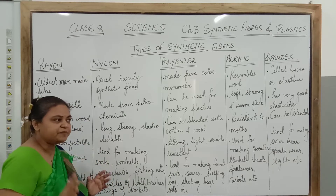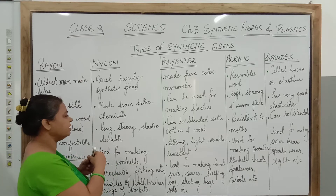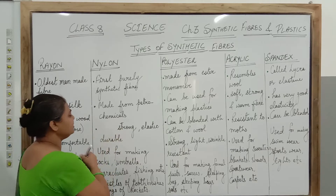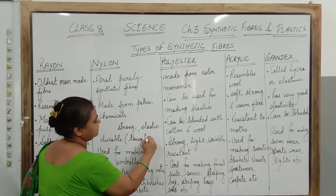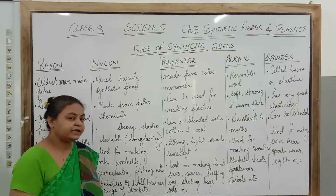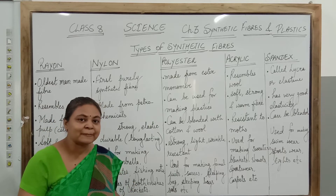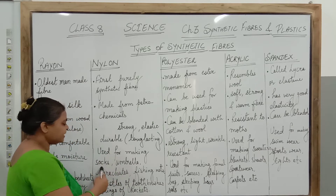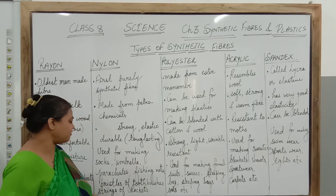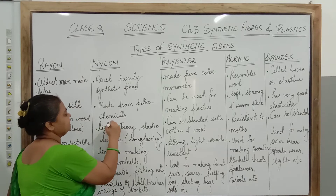Nylon was made in the early 1930s by the DuPont company. The important properties of nylon are that it is strong and elastic. It is durable, meaning long lasting — we can use it for years together. Its elasticity is good, it does not get wrinkled, and it does not need ironing again and again. It is also water resistant and lightweight.